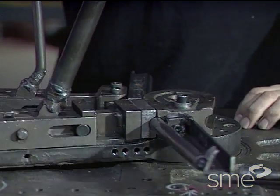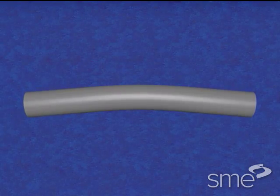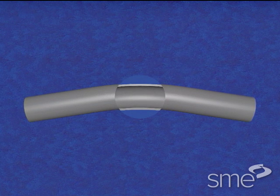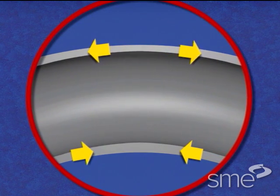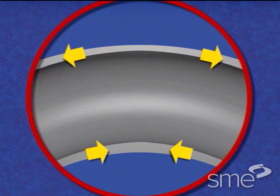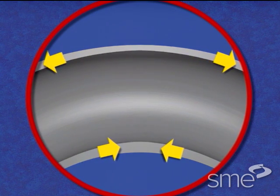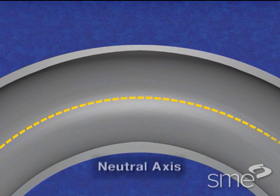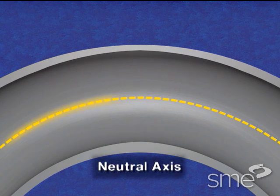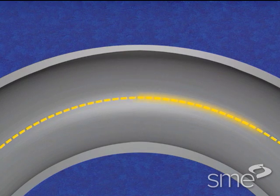As the tube is bent, it undergoes a distortion so that the material outside the bend is forced to stretch under tension, and the material inside the bend is forced to compress. Between the tension and compression zones is a boundary line known as the neutral axis, which is important since bending operations are calculated from its location.